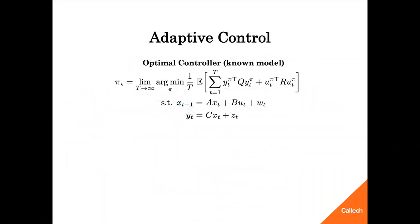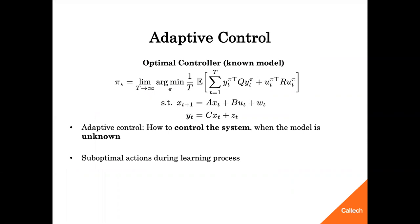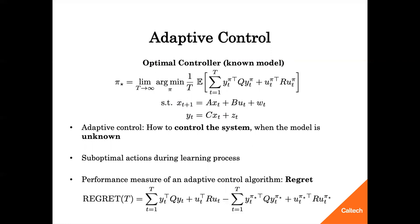Let pi star denote the optimal policy for a given LQG. Adaptive control studies the problem of controlling an unknown system. Due to lack of knowledge of the model, an agent needs to learn the system dynamics and design a controller based on the information data so far. This lack of model knowledge causes the agent to take suboptimal actions compared to the optimal policy pi star. Therefore, the performance of an agent is measured by a notion called regret, which is the difference between the cost that adaptive control policy acquires and the cost of the optimal controller. This problem has two major steps: learning the system dynamics and designing the controller.